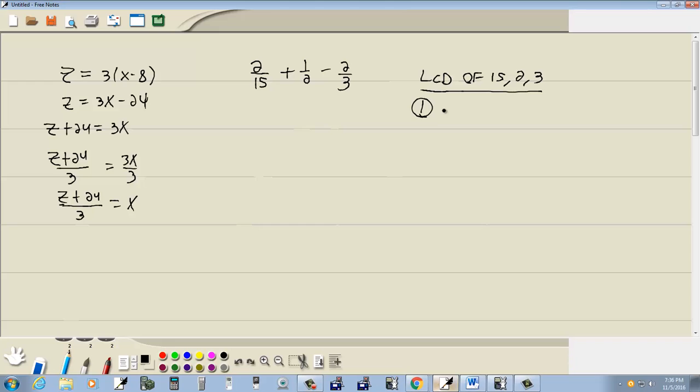But our first step is to do the prime factorization. So in order to find the least common denominator. You have to know how to do the prime factorization. And that's where you do the tree. Fifteen is three times five. Three is prime. And five is prime. So we circle both of them. Two is prime. So we don't do anything with it. And three is prime. So we don't do anything with it.